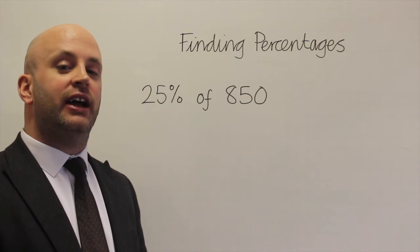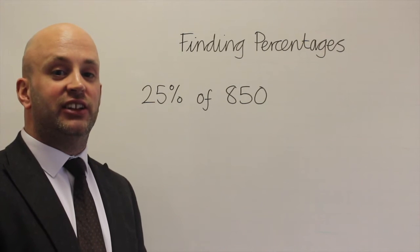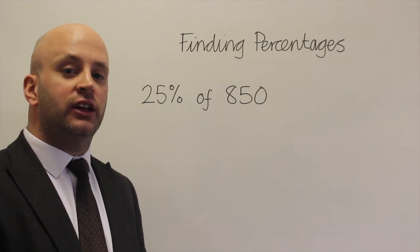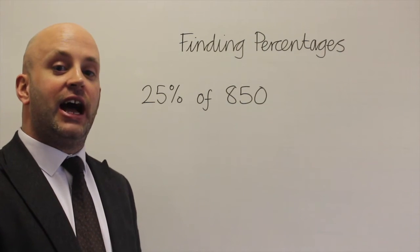The first way recognizes that 25% is the same as a quarter and we can do this mentally because we know to find a quarter we can halve it and then halve it again.